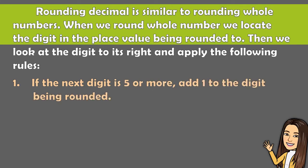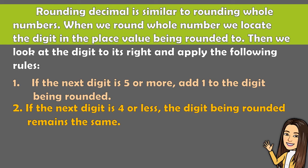Rule number 1, if the next digit is 5 or more, add 1 to the digit being rounded. Rule number 2, if the next digit is 4 or less, the digit being rounded remains the same.